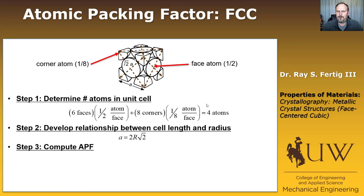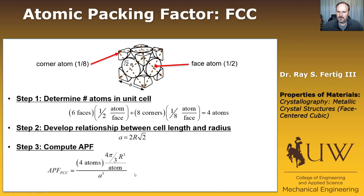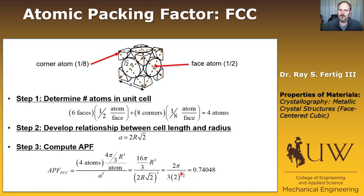Now we compute the atomic packing factor. It's the volume of the atoms — 4 atoms × (4/3)πR³ — divided by A³, the volume of the whole cell. Substituting A = 2R√2, so A³ = (2R√2)³, and doing the algebra, the atomic packing factor for FCC works out to about 0.74. That means in an FCC material, 74% of the space is occupied by atoms.